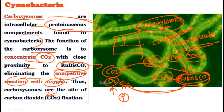Carboxysomes are the sites of carbon dioxide fixation. Whatever CO2 is present, in the process of photosynthesis, CO2 is trapped by the RuBisCO enzyme. RuBisCO can trap CO2 and create food material, and its oxygenase activity is suppressed because carboxysomes maintain an environment with higher CO2 concentration than oxygen. This is an important structure found in cyanobacteria.